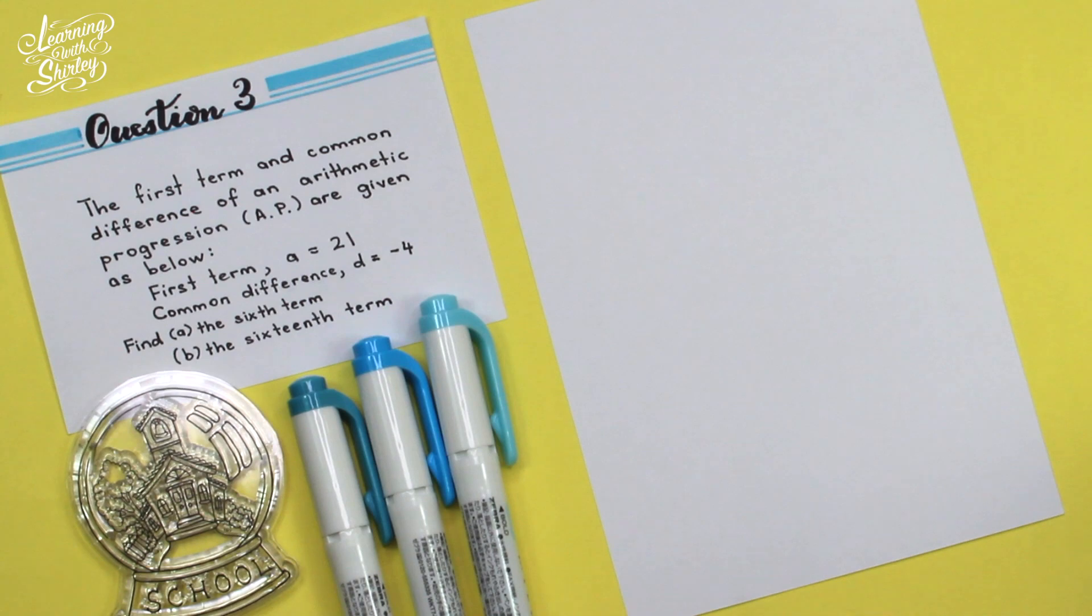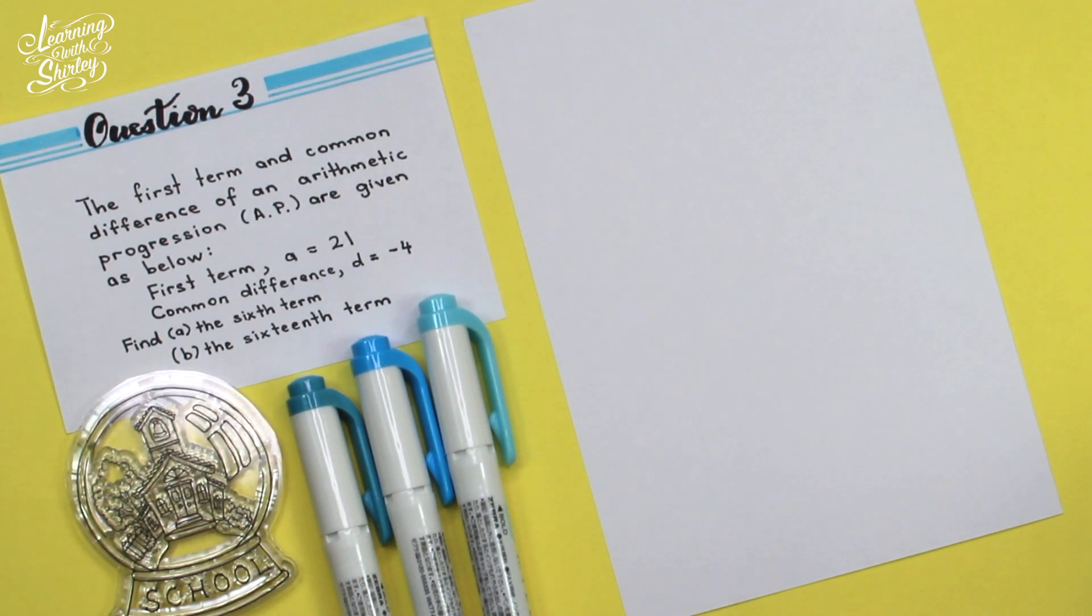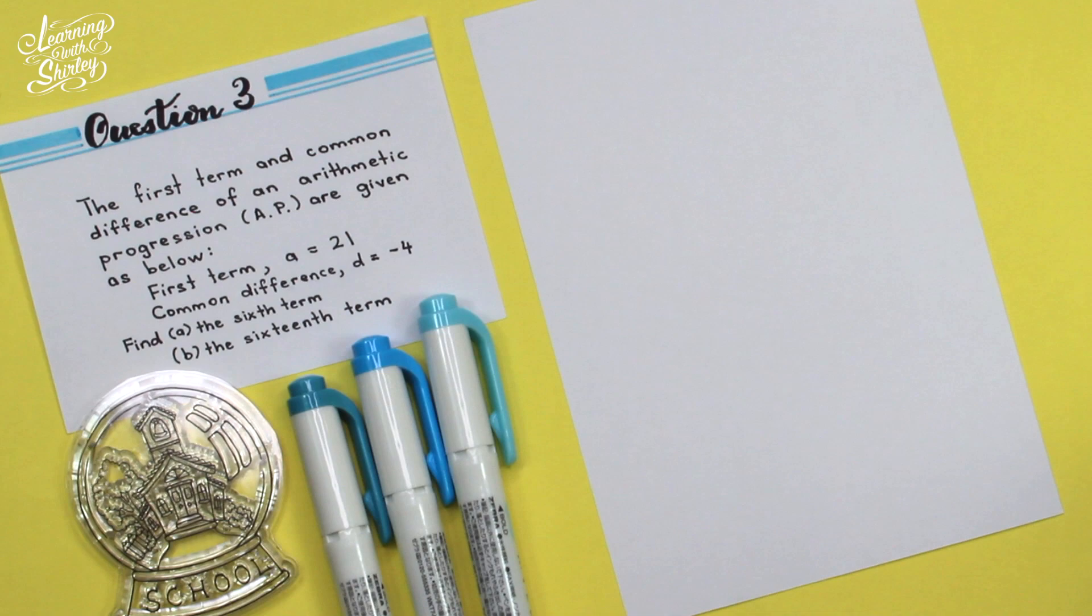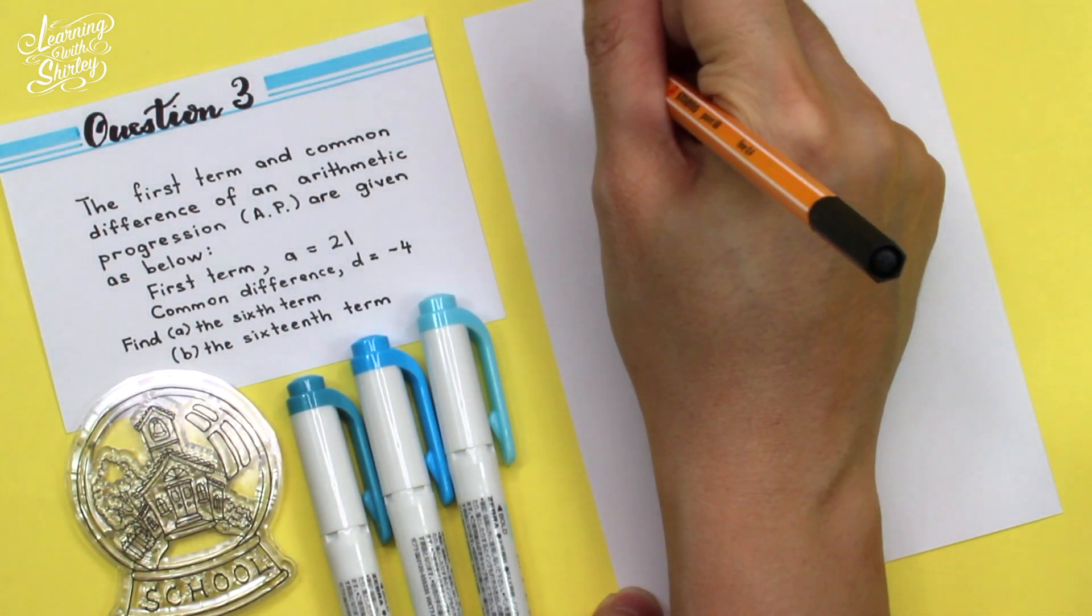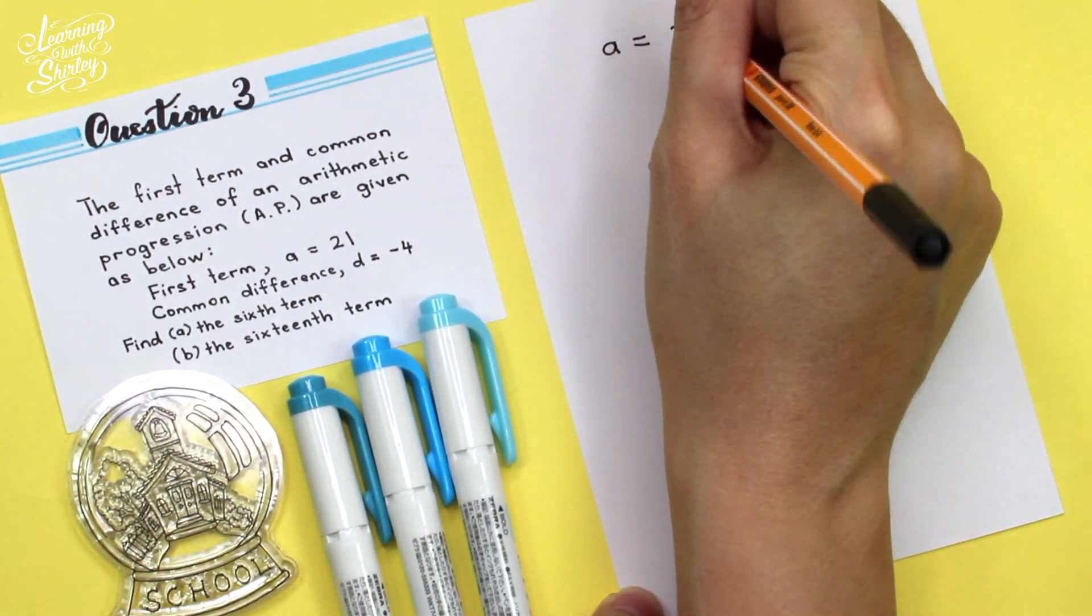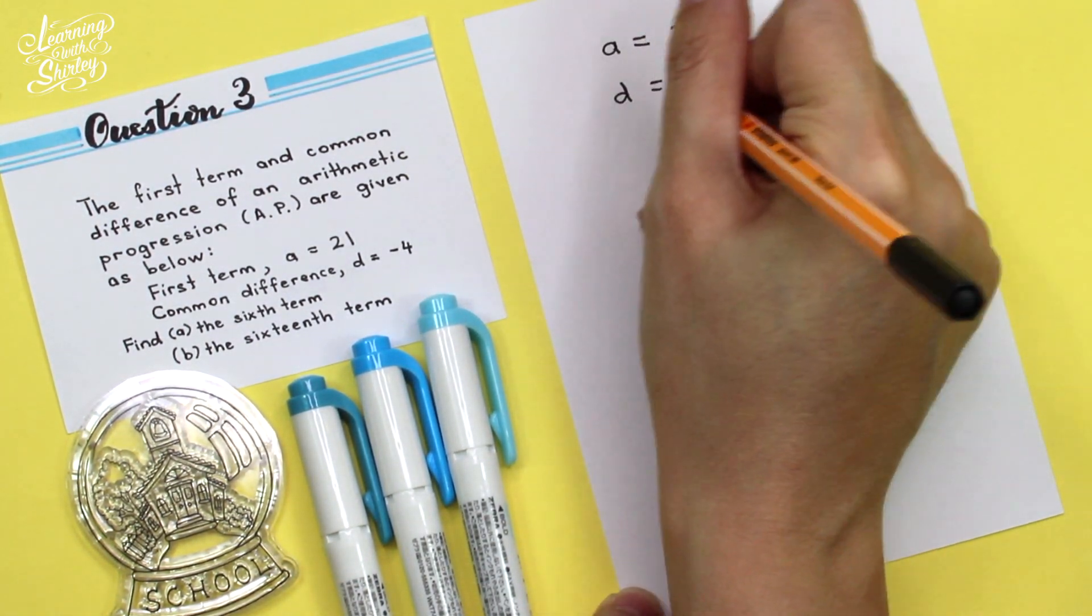For question 3, the first term and the common difference of an arithmetic progression AP are given as below. The first term, A equals to 21. The common difference, D, is negative 4. So for this question, we list down the information given, which are A equals to 21 and D equals to negative 4.